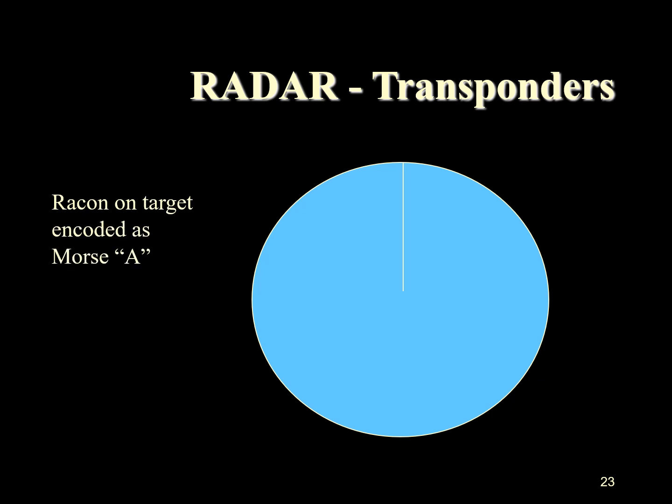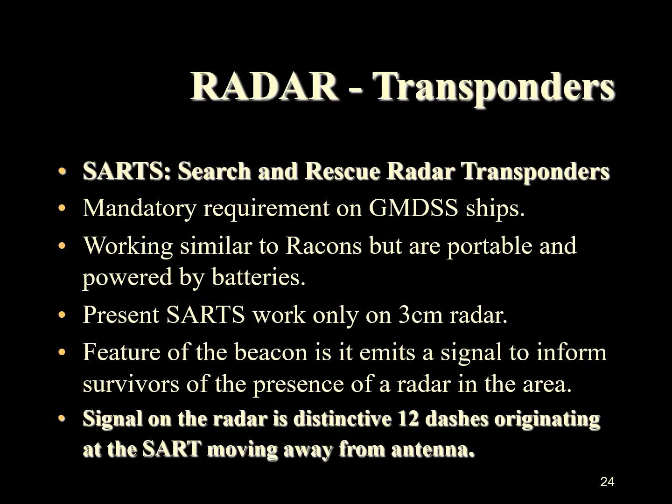Here is an example of a RACON transmitting the Morse signal alpha — the letter A — which is DIT DA. DIT is the short flash and DA is the longer flash.